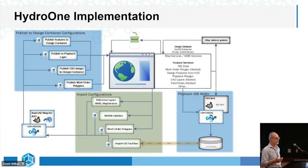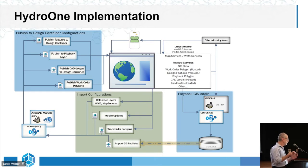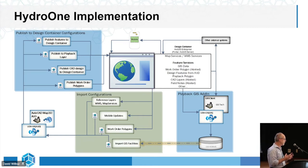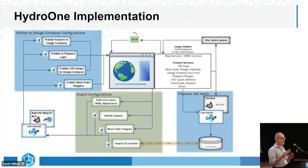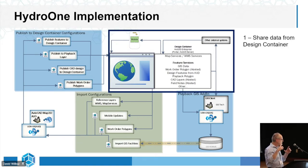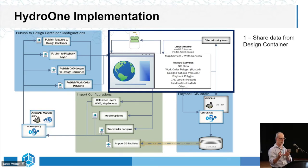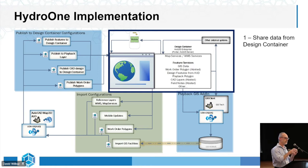Hydro One was an interesting project because a lot of the components we did there were things we had done bits and pieces in different places — also a concept that Sergey had been working on for years about getting a design container to have a central place to share all GIS data. We implemented it at Hydro One using ArcGIS Enterprise. The design container centralizes everything so we can share data between GIS, AUD, and external systems, including SAP work management.